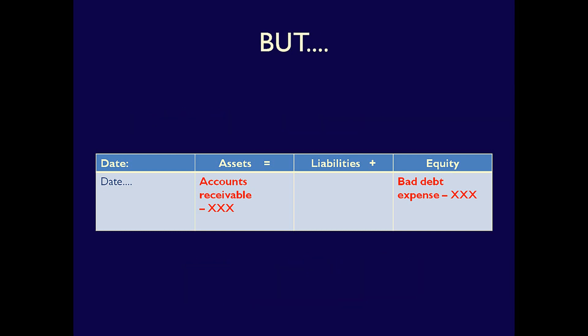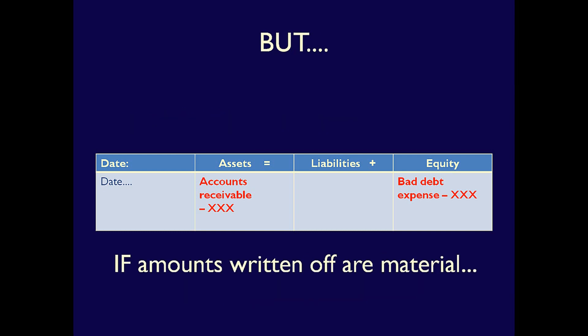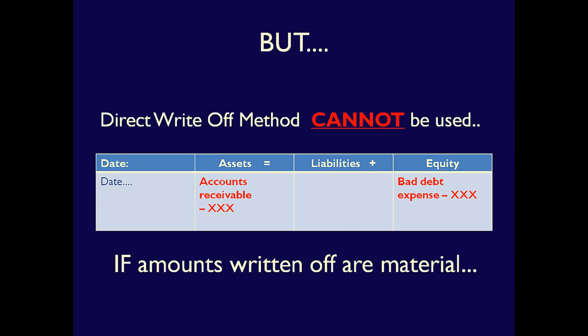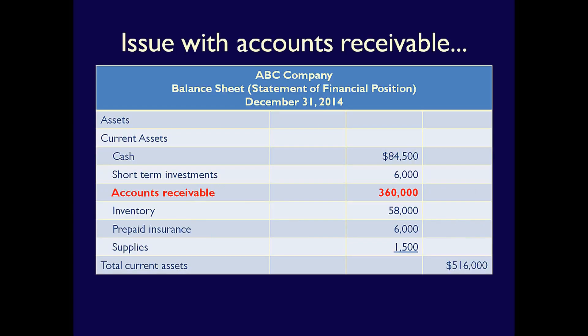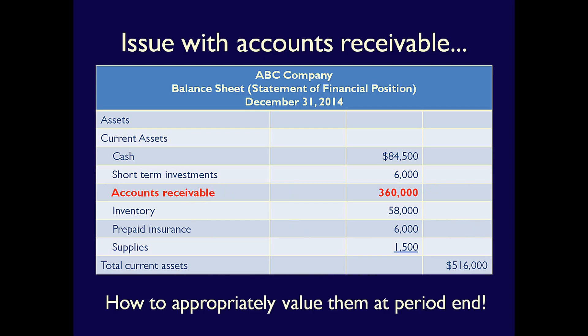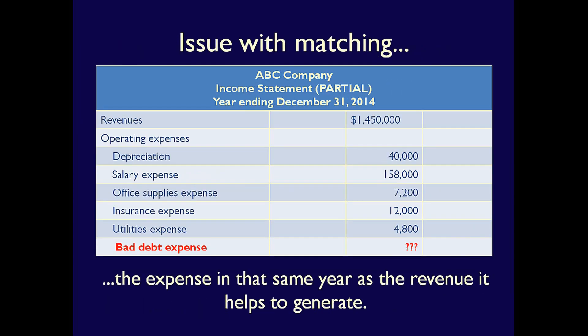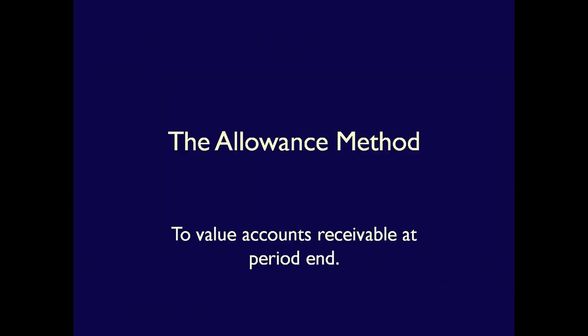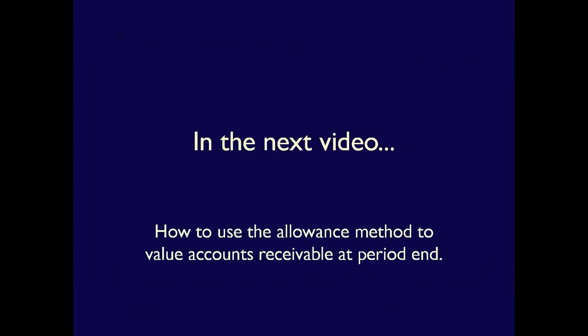What happens if the write-offs are large in relation to the other numbers on the financial statements? In that case, we definitely cannot use the direct write-off method. If we did, we would overstate our accounts receivable in 2014, and we would overstate our expenses in 2015. Since we can't use the direct write-off method, what method can we use so our assets will be appropriately valued in 2014 and we'll record our bad debt expense in 2014, the same year that the related revenue is recorded? Well, we can use the allowance method, and that is the topic of our next video.